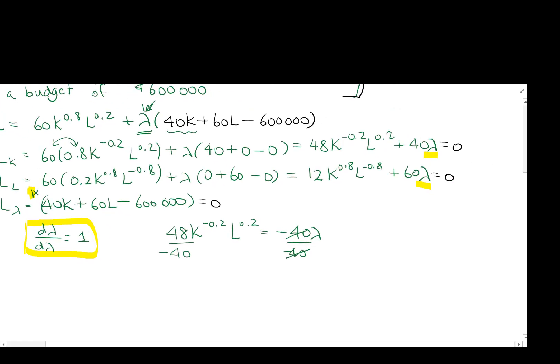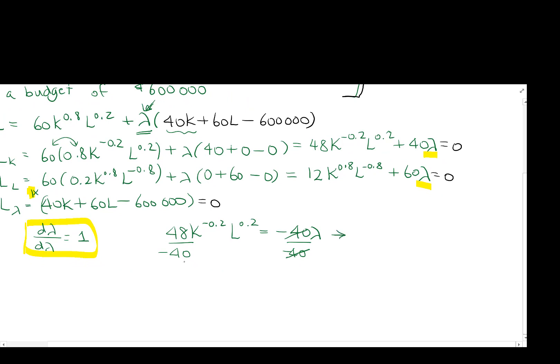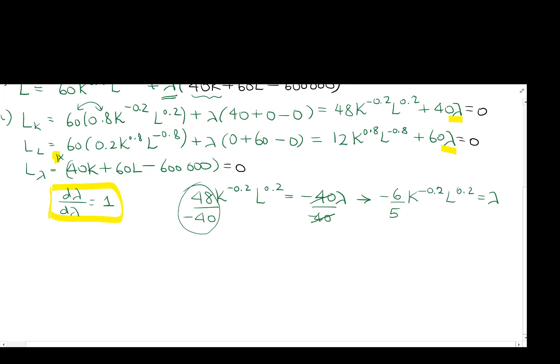Divide by negative 40, and we get, let's see here, negative 12 over 10, which becomes, I'm just trying to work this fraction down. That's like 6 times 8, and 8 times 5, so we get 6 over 5, negative. You don't have to simplify the fraction down if you don't want. So our Lk, its derivative gives us that lambda equals to negative 6 fifths K to the negative 0.2L to the 0.2.